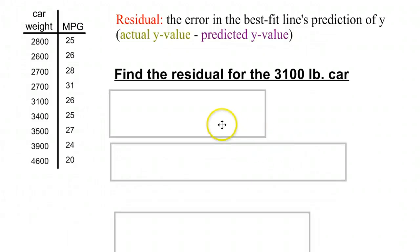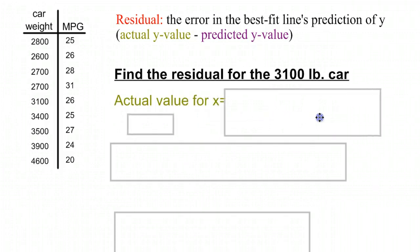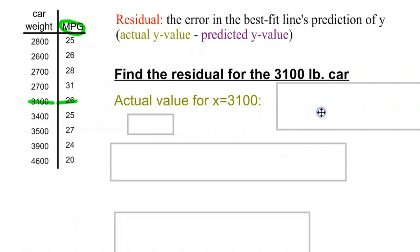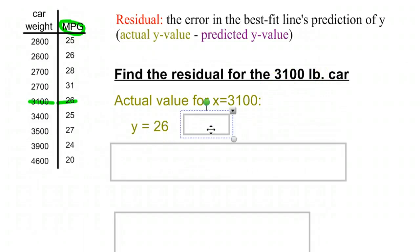A couple steps. First thing we need to do is make an actual prediction for a 3100 pound car and compare that to the actual value, which right here, 3100 pounds is going to have an actual value of 26 miles per gallon. So for when x equals 3100, 3100 pounds, y equals 26 miles per gallon.